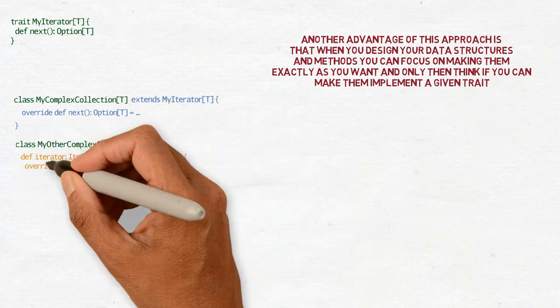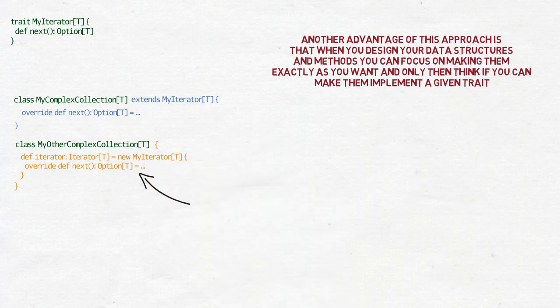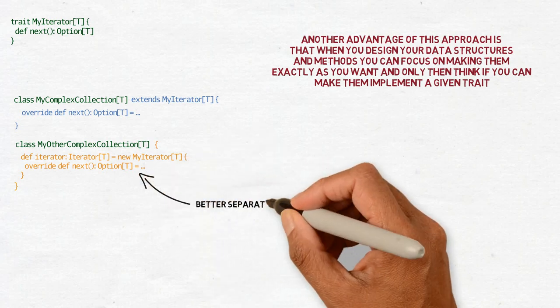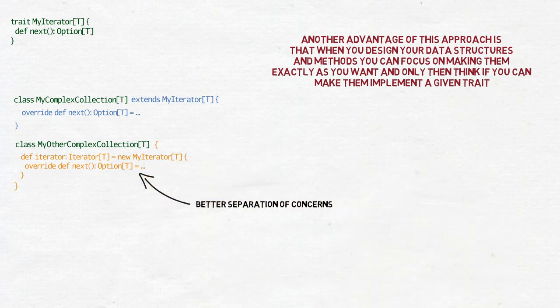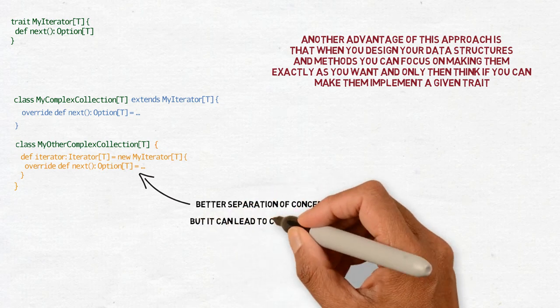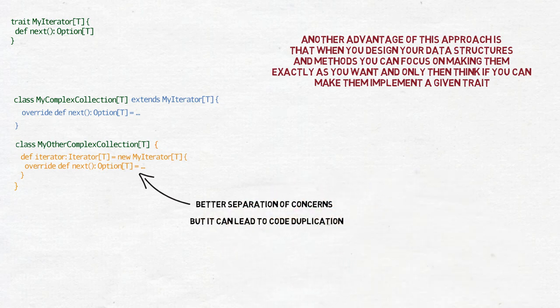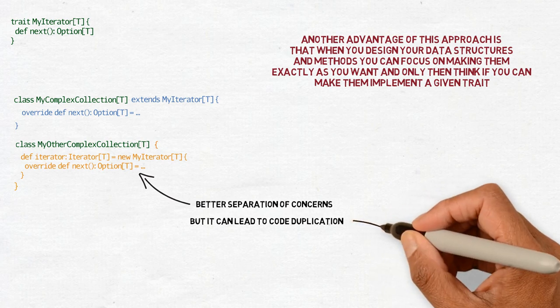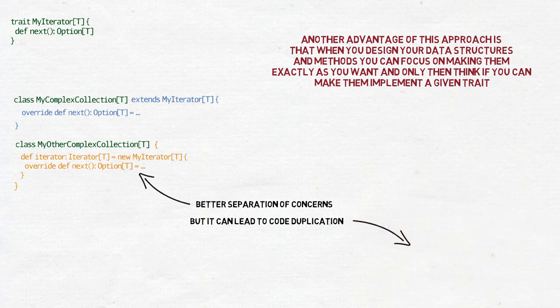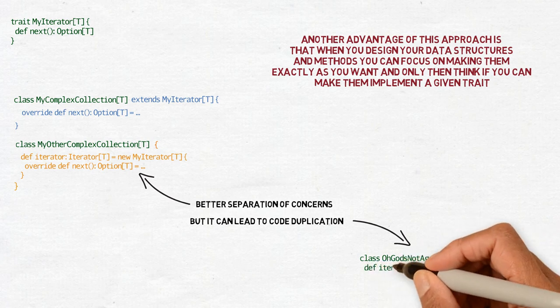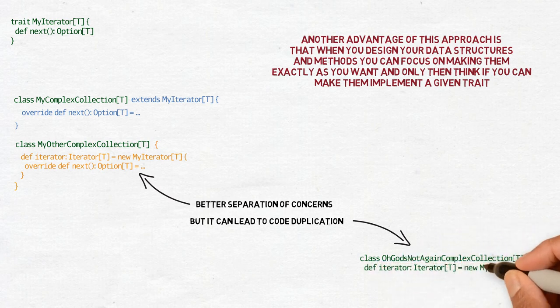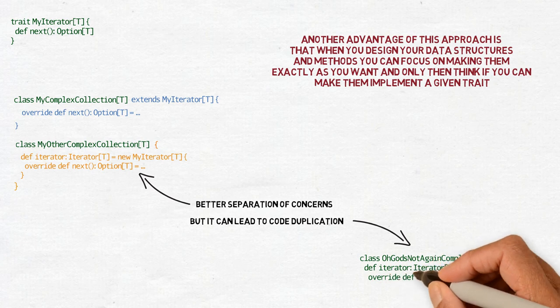The second solution provides better separation of concerns, but on the other hand, there is a disadvantage in that it can lead to code duplication. In many cases, an interface is going to be implemented in the same or a very similar way in several classes, but since those implementations are independent of each other, the code has to be repeated.